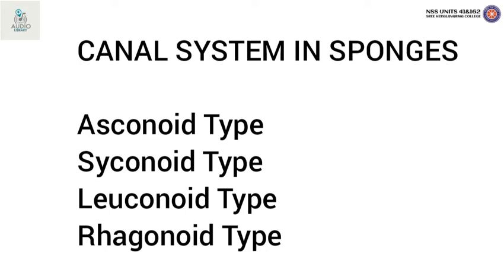There is also the Rhagon type. Most leuconoid sponges develop through asconoid and syconoid stages. However, in demosponges, it is derived from a different stage called rhagon, which in turn arises by different rearrangements of the inner cell mass. The rhagon type of sponge is conical in shape, has a broad base, and has a single osculum at the summit.